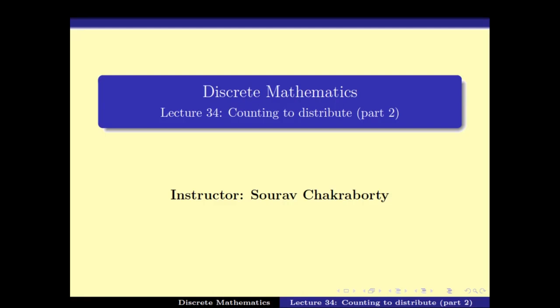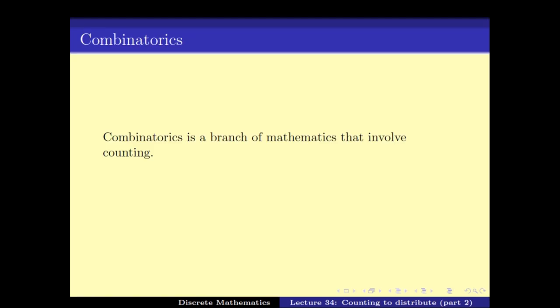Welcome back. We have been looking at how to count the cardinality of sets. This is what we call combinatorics, which is the branch of math that involves counting. Most of the time the typical question is: given a set S, what is the cardinality of S? In other words, what is the size of the set S, or how many elements are there in the set S?